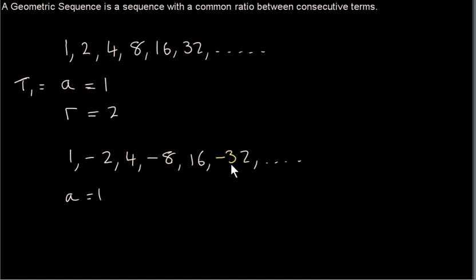Here is another example of a geometric sequence: 1, -2, 4, -8, 16, -32. In this sequence, a is 1, just like before. But what about r? Well, r can be found by taking, say, the second term and dividing by the first term, or the third term divided by the second term. Whatever. Take any two consecutive terms. If we take t2 over t1, we get minus 2 divided by 1, which is minus 2. So for this sequence, r is negative.